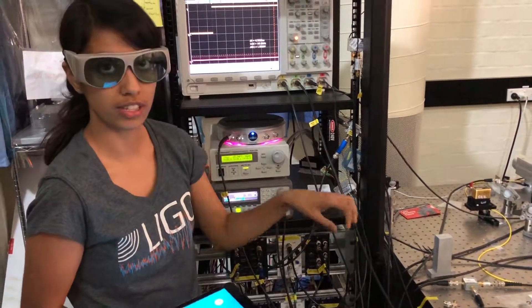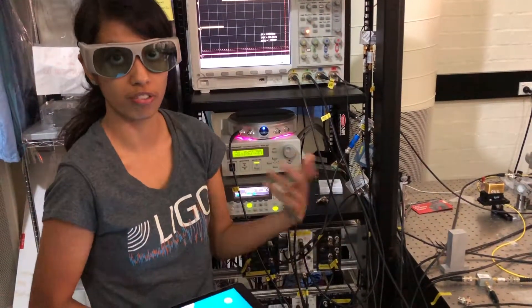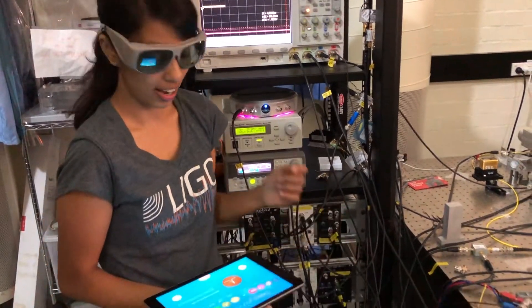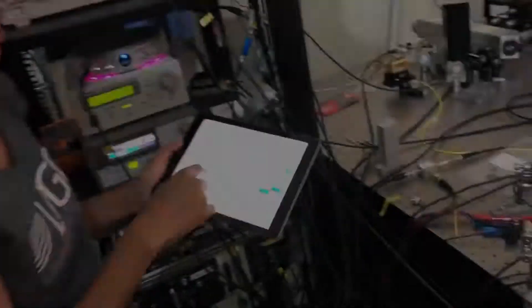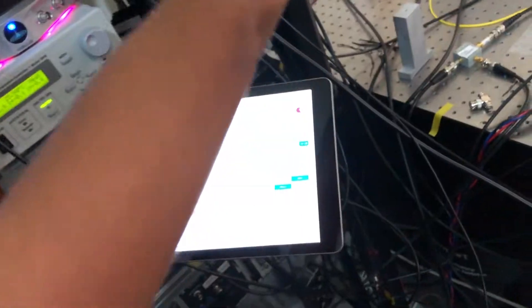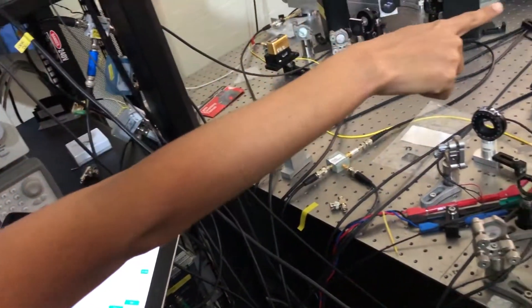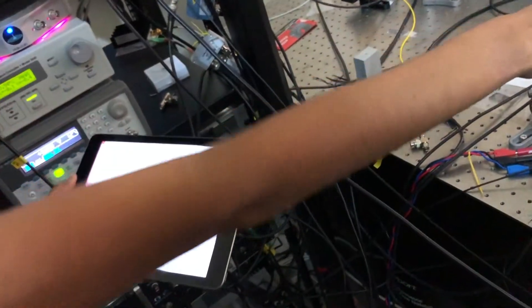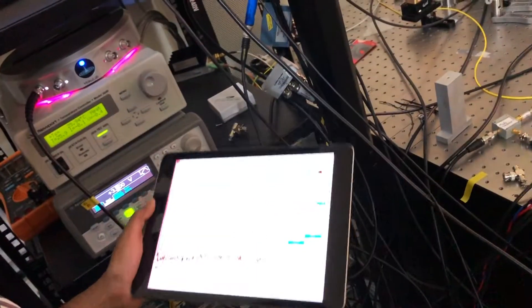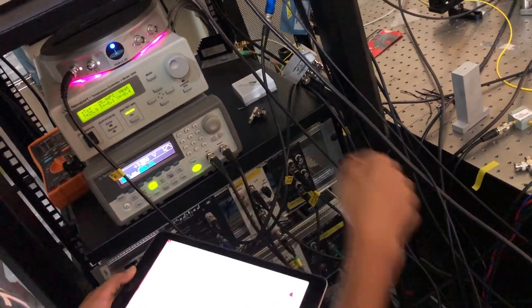So we force one of the lasers to follow the frequency or phase of the other laser, and that's what we use the Moku for. We take the laser beam coming from that table and beat it with the laser beam on this table on a beam splitter, and we measure that beat with a photodiode, and we pass that photodiode output into our Moku, and we look for the beat.